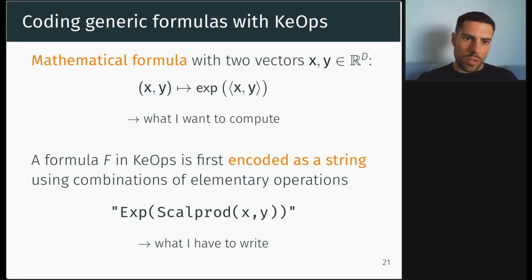So how KeOps works. Basically, what you want to do is to compute a mathematics formula based on data vectors. So here you want, for instance, to apply the exponential to the scalar product between x and y. So here it's what you want to compute. And to do that, you will just have to write a formula that is, in KeOps, encoded as a string. So you just have to write a text string describing your operation. So here you want to apply the exponential to the scalar product between x and y. So here it's what you're going to write.